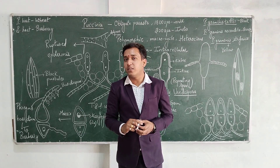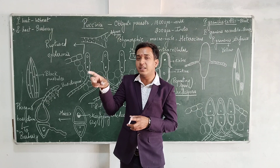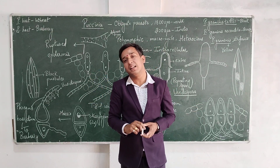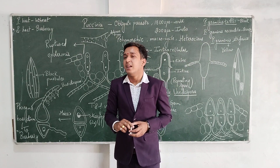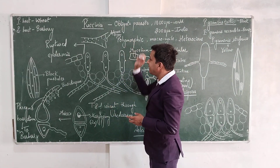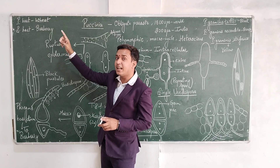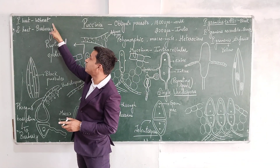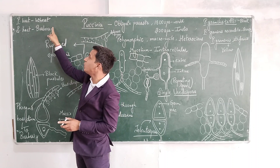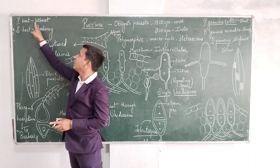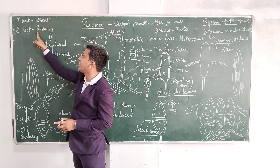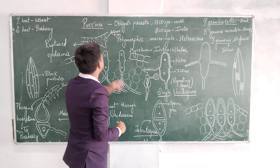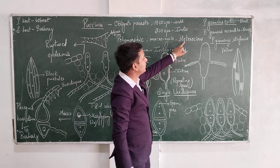In heteroecious fungi, one part of the life cycle is completed in one type of plant and the remaining part is completed in the next plant. As Puccinia is a heteroecious species, it completes its cycle in two plants. Its primary host is wheat, and its secondary host is barley.